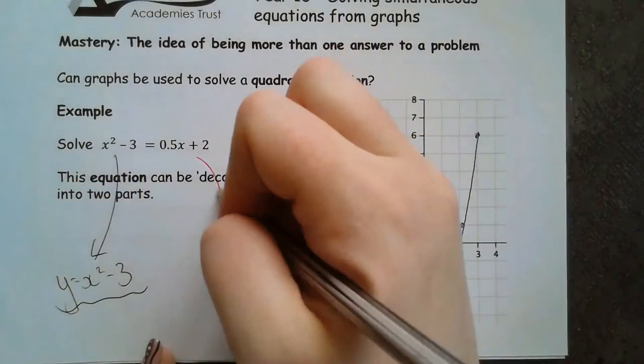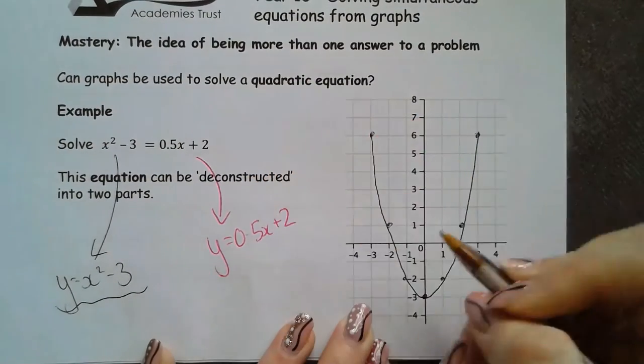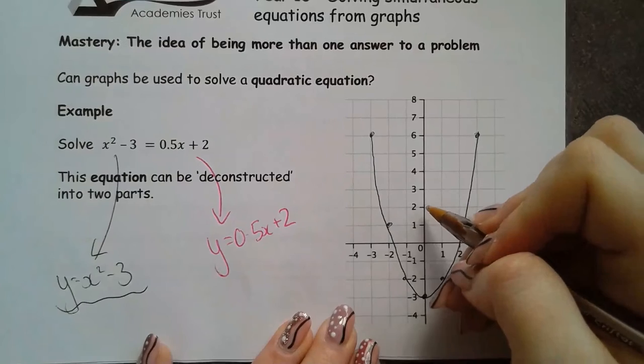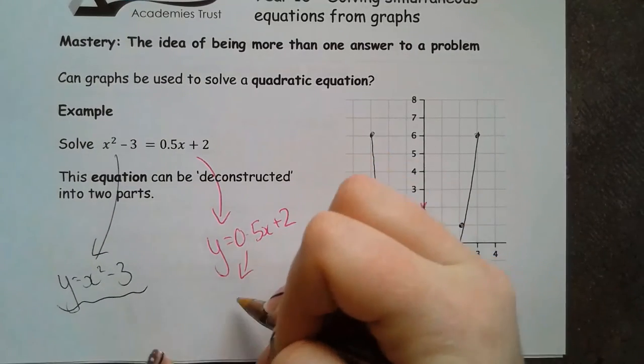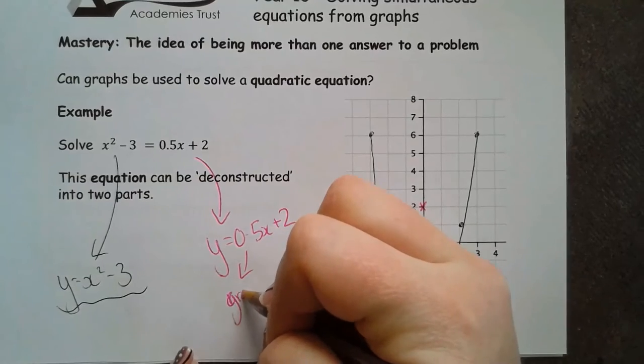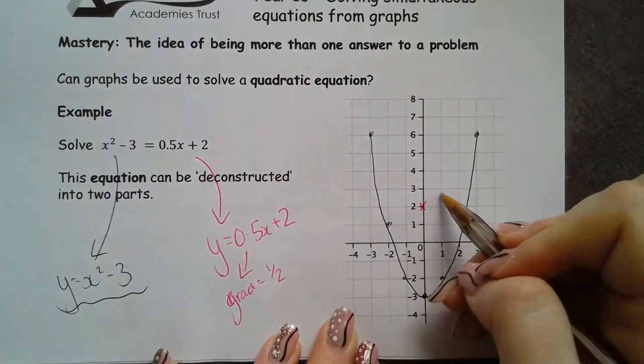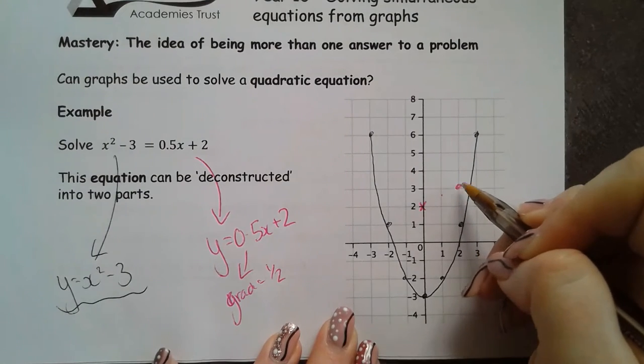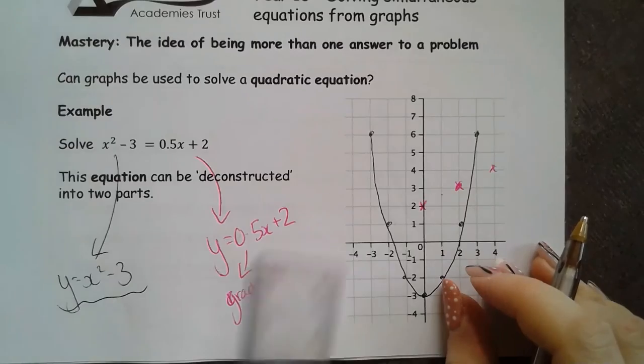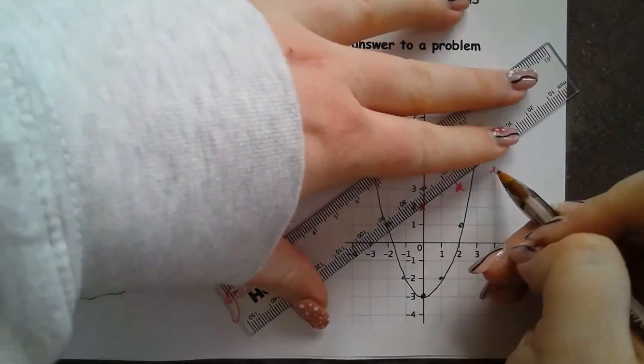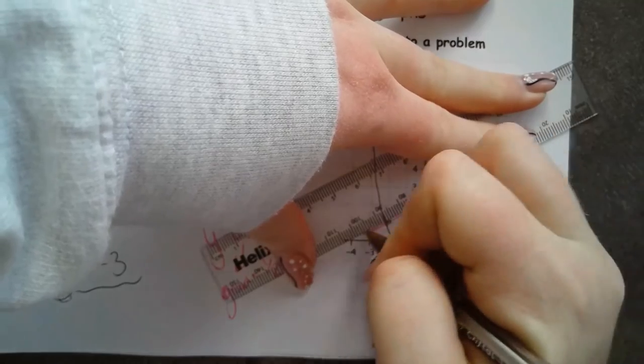I'm then going to draw y equals 0.5x plus 2. So 0.5x plus 2 means I'm going to go through 2. And this 0.5 means that my gradient is a half. That means for every 1 across, I go half up. Or for 2 across, I go 1 up. This is what we've seen earlier on. So 2 across and 1 up. So 2 across and 1 up gets me a line that looks like this.